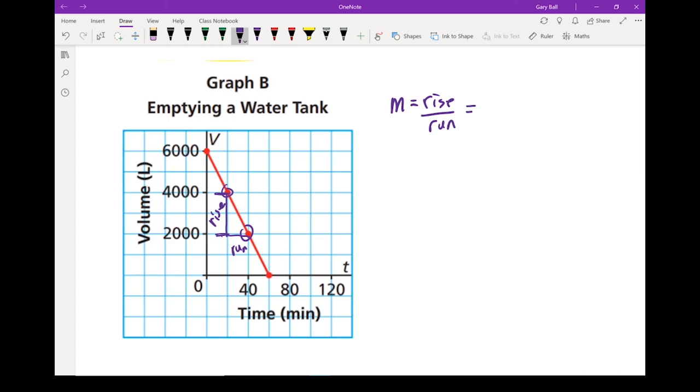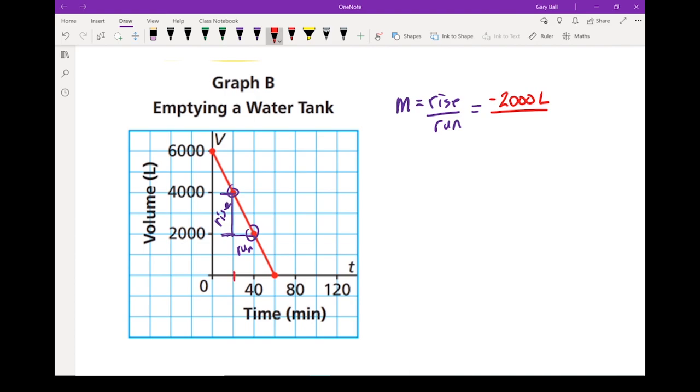Now when I look at my rise, this one is a little bit different. It's going from 4,000 down to 2,000. So we've actually got a rise of negative 2,000 and let's put our units in right off the bat. The tank went down 2,000 liters. Down, got to put a negative on it. And our run goes from 20 to 40. That is in 20 minutes. If I do that 2,000 divided by 20, I get M equals negative 100. If I put my units on it, liters per minute.